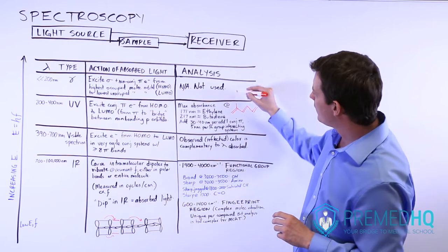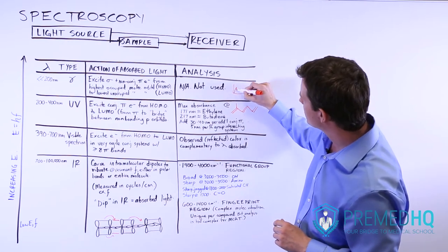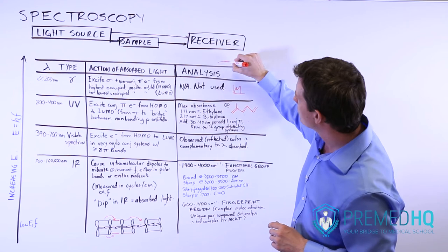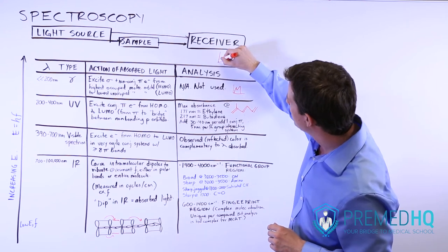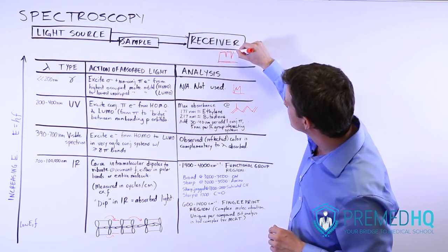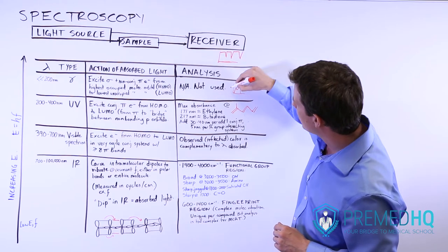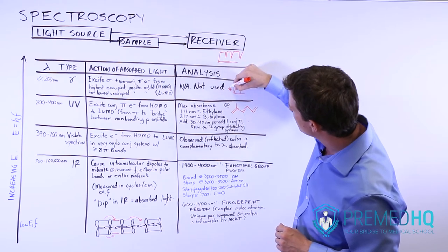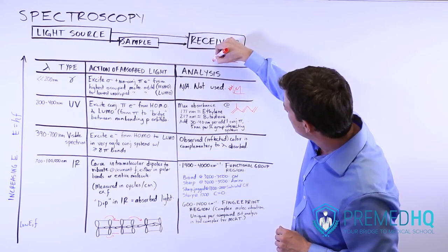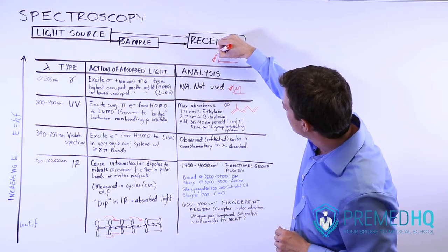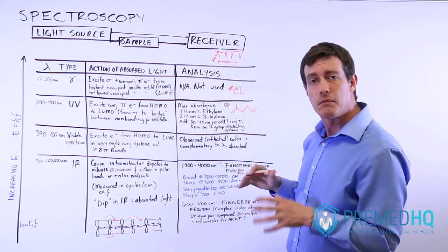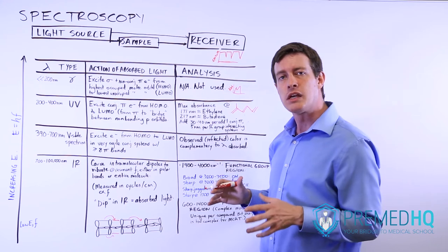Unlike other spectroscopy types where you tend to see a spike, with infrared it's actually the opposite — you see dips whenever the light is being absorbed. The graph shows the amount of light that makes it through, and whenever there's a dip, that means the light is being absorbed.